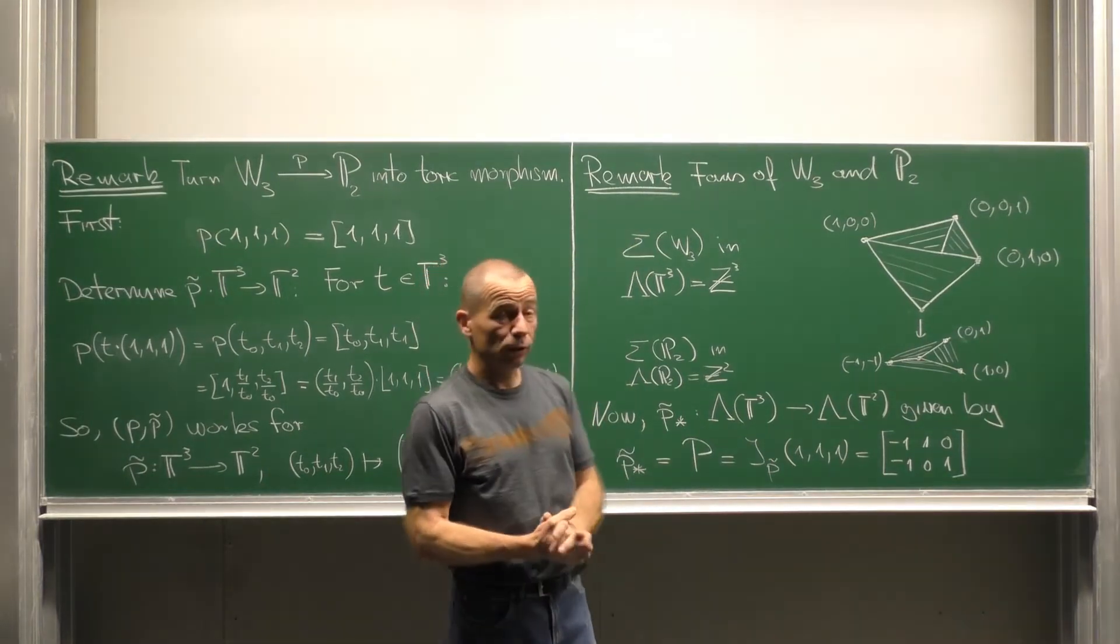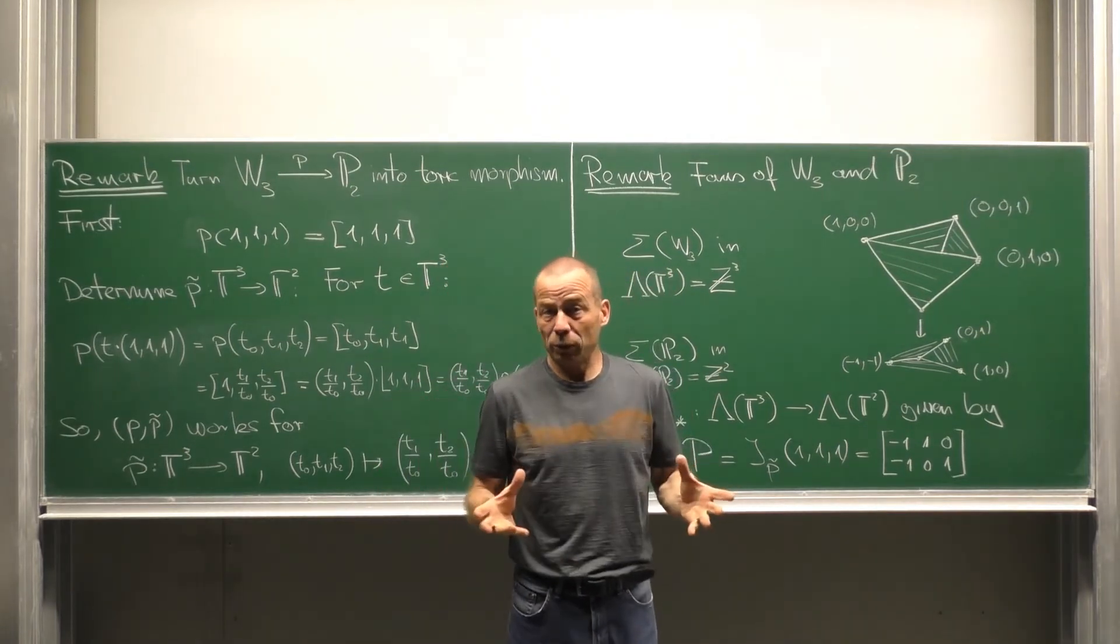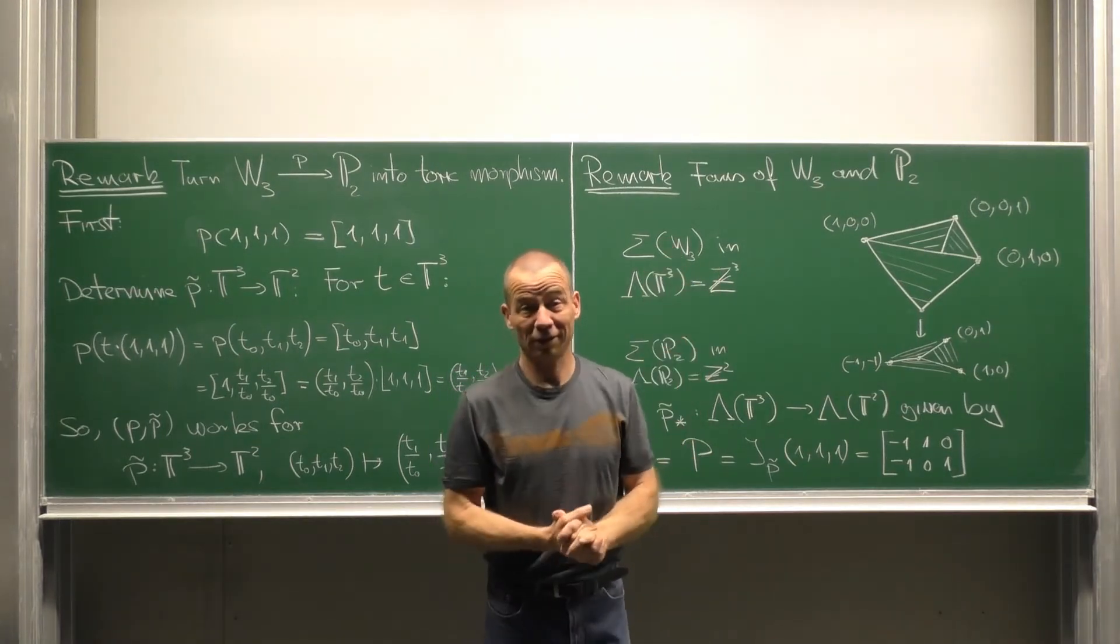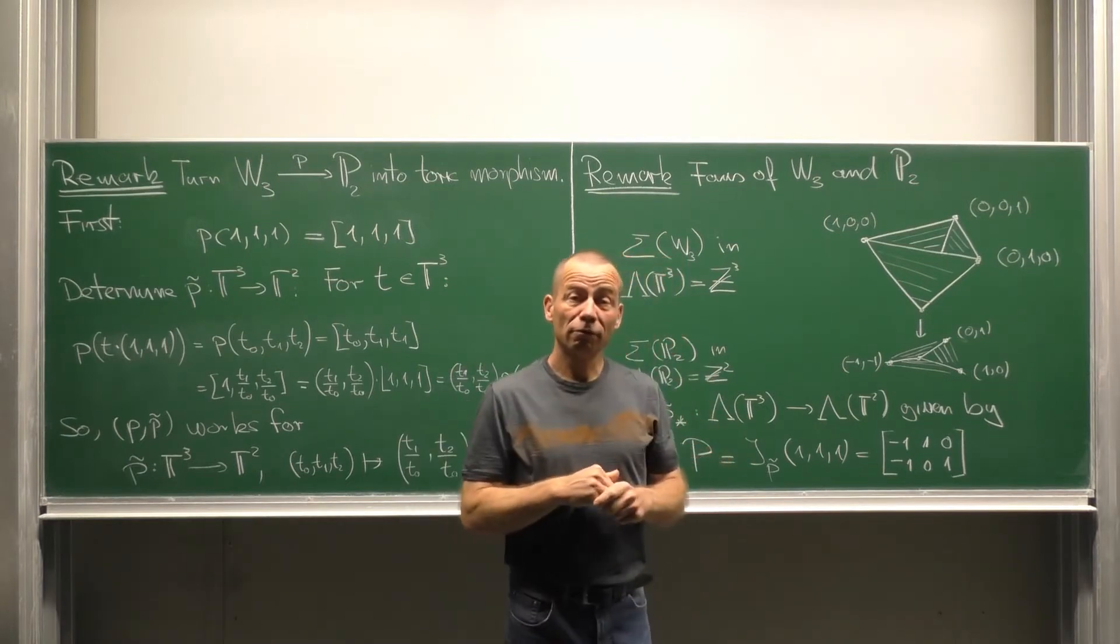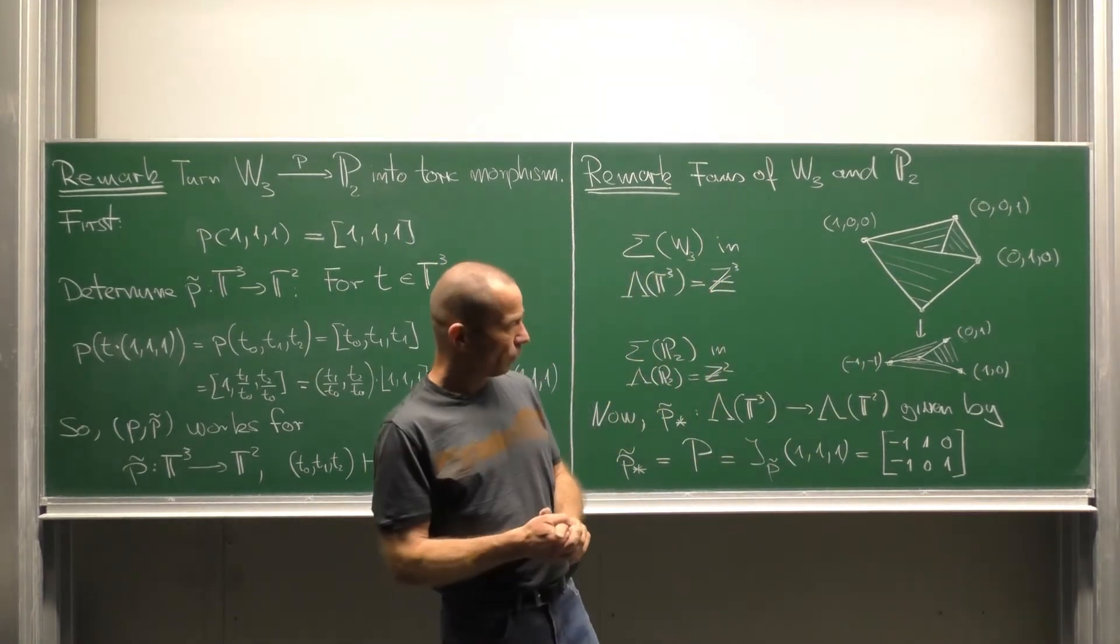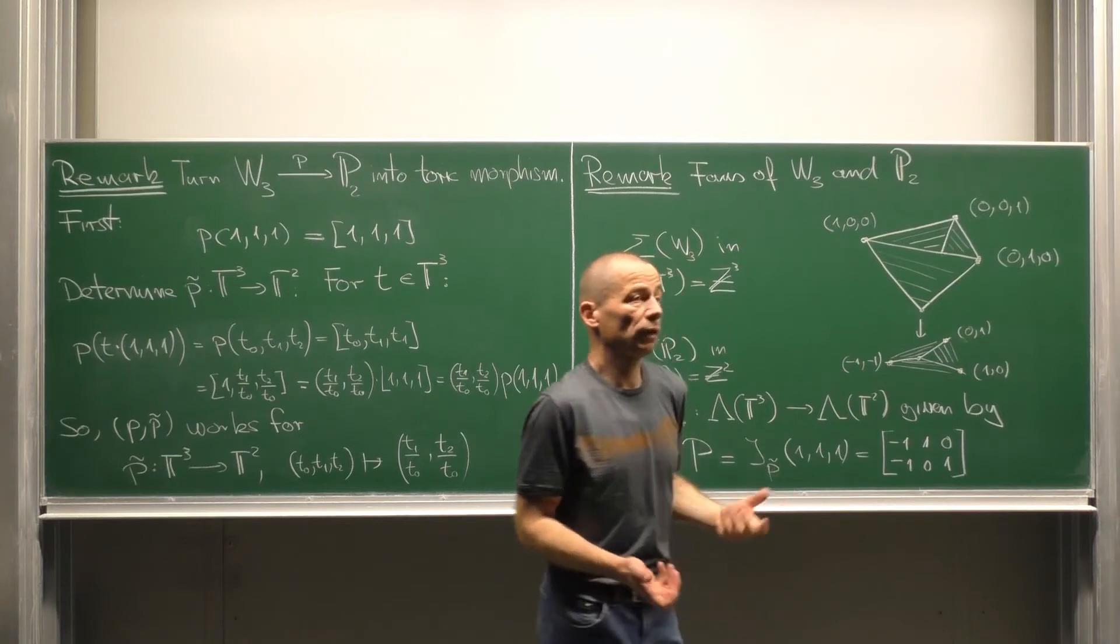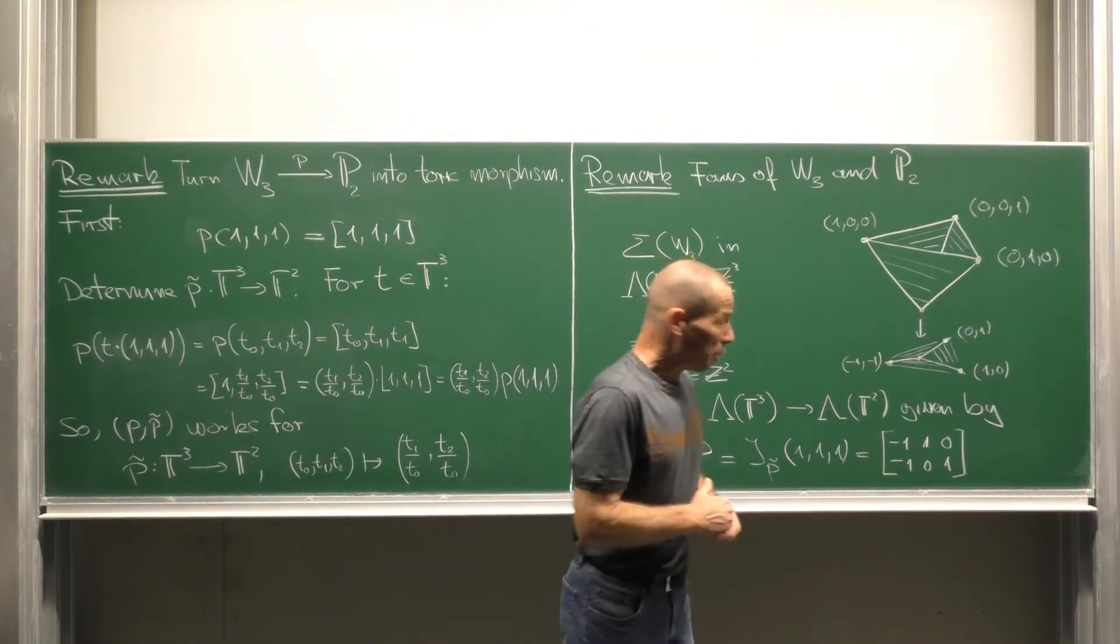First we need the fans of W₃ and the plane P². The fan of W₃ is almost the fan of C³ which we already know to be the octant and we just have to remove the cone which comes from those one-parameter subgroups having the origin as their limit point. So we end up with all proper faces of the octant. The fan of the projective plane we already know. It is the fan in the plane having three maximal cones spanned by (1,0), (0,1), the next one (0,1), (-1,-1) and then (-1,-1), (1,0). So from the picture we can already guess what our map of fans should be.